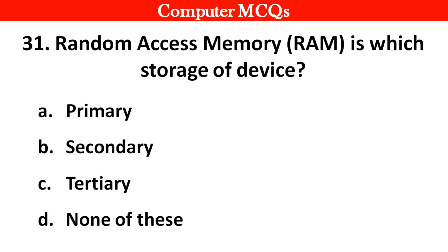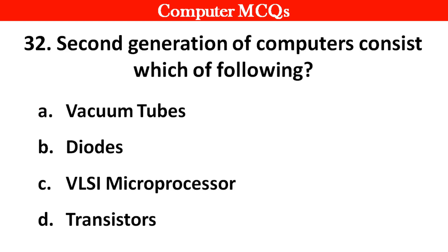Next question. Second generation of computers consist of which of the following? Options A: Vacuum tubes, B: Diodes, C: VLSI microprocessors, D: Transistors. Right answer is option D: Transistors.